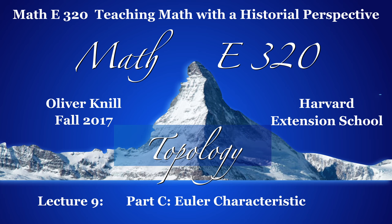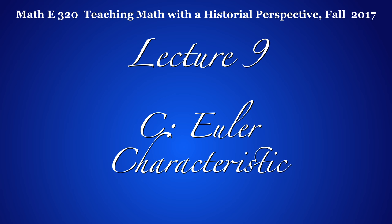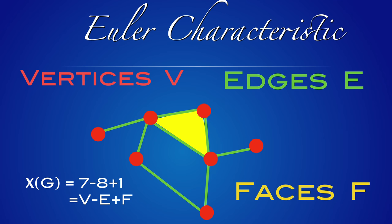In this part C, we look at the Euler characteristic. It is a number attached to a geometric object — if two objects have different Euler characteristics, they are not topologically equivalent. Here is the definition, formulated in the more general framework of graphs. We have vertices and edges, and we look also at triangles in this graph, called faces. In this example, we see seven vertices, eight edges, and one face — the Euler characteristic is zero.